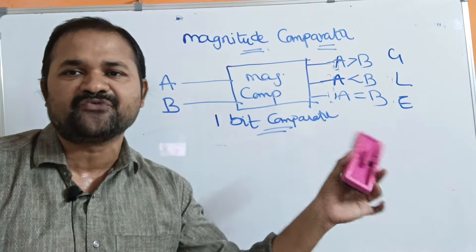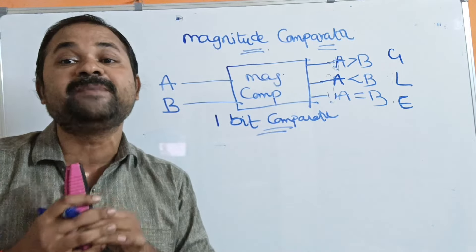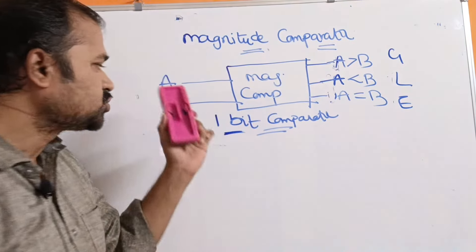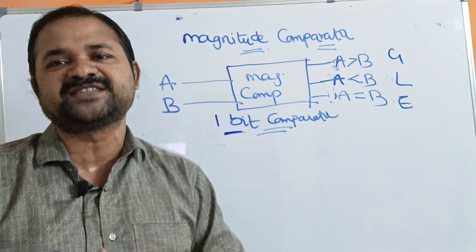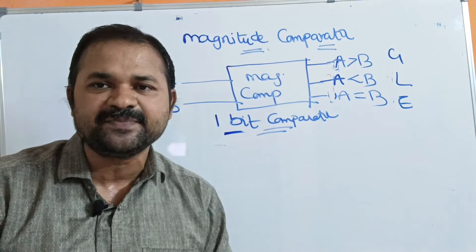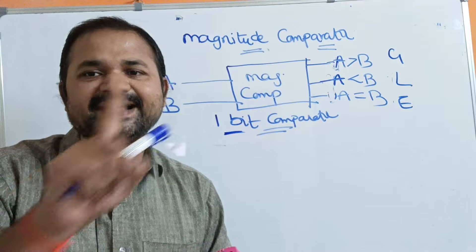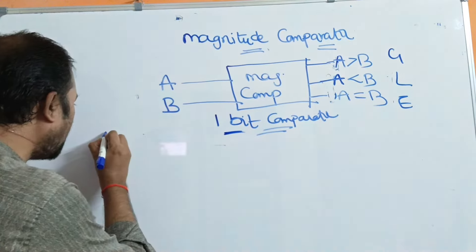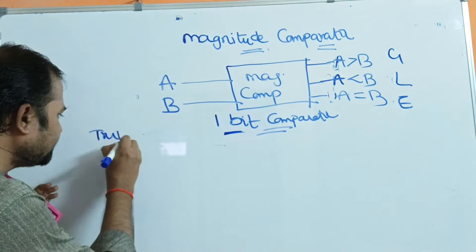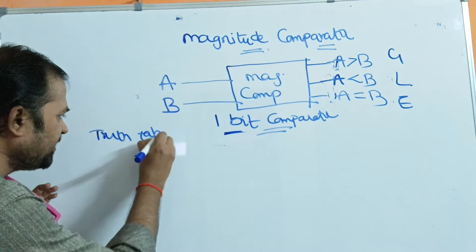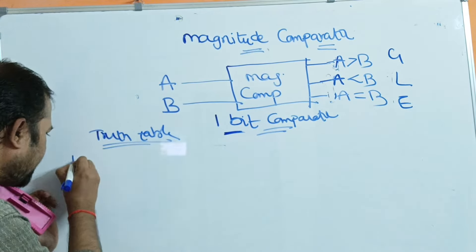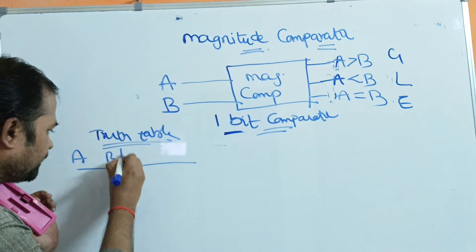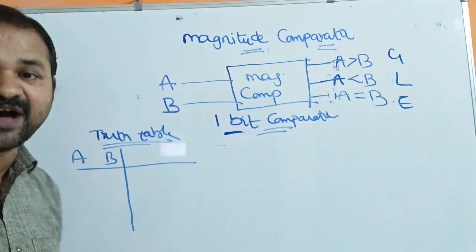In this video, we are going to discuss the 1-bit comparator. The name itself specifies the meaning — a 1-bit comparator means the binary number contains only 1 bit. Let us see the truth table. Here the inputs are A and B, and it accepts only 1 bit.